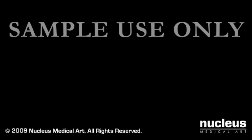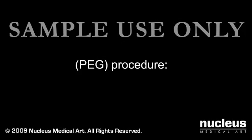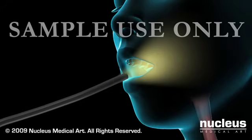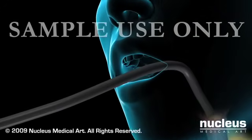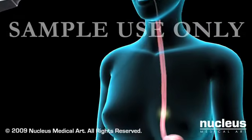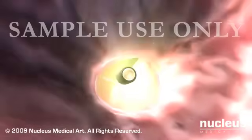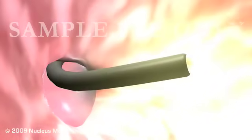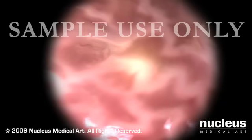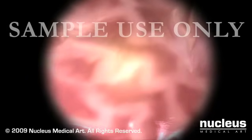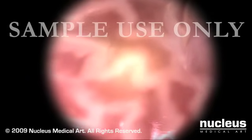The most commonly used PEG placement procedure is the pull method. During this procedure, your doctor will insert a lighted endoscope through your mouth and thread it down your esophagus and into your stomach. A camera attached to the endoscope will produce images of the inside of your stomach, which will be displayed on a video monitor.